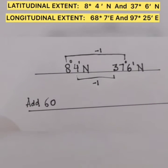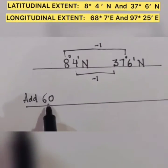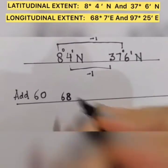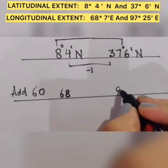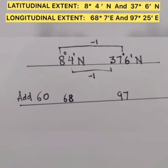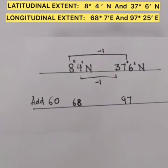Moving on to the longitude, what we are going to do here is I will be adding 60. So adding 60 to 8 becomes 68 and adding 60 to this digit here becomes 97 and 25. Can you see the addition?